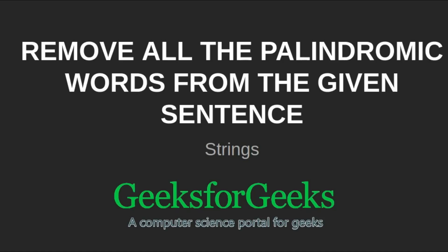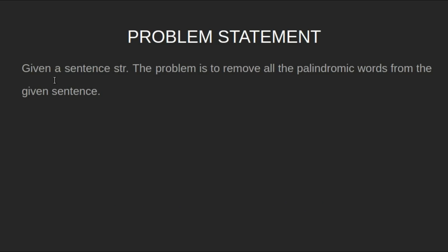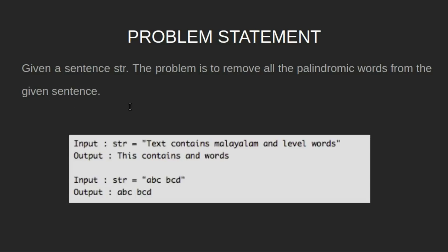Let's have a look at the problem statement. Given a sentence str, the problem is to remove all the palindromic words from the given sentence. For example, for the input string: 'text contains malayalam and level words', malayalam and level are palindrome words. So we will remove them and the output will be 'this contains and words'.